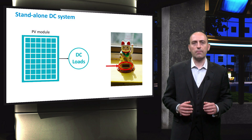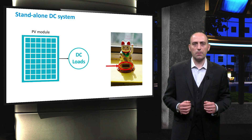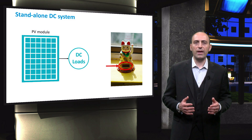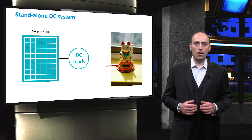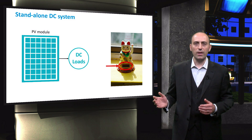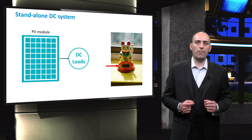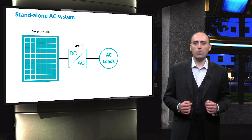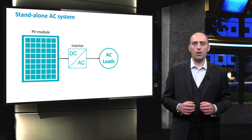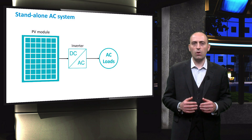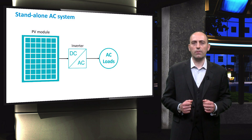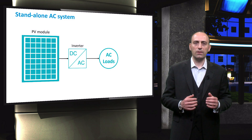The most simple PV system is the direct current PV system without storage. Here the DC output of the module or array is directly connected to the DC load. A practical example is a toy that embeds a small solar panel, which is highlighted in red. It is also possible to connect AC loads in this simple PV system without storage, which involves adding an inverter that converts DC to AC power between the power source and the load.